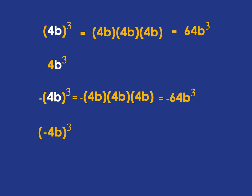And then in the next example, we've got negative 4b in the brackets cubed, so it's that whole negative 4b that is being cubed. So what you get is negative 4b times negative 4b times negative 4b, and a negative times a negative times a negative gives me a negative, and then 4 times 4 times 4 is 64, b times b times b is b cubed. So we get negative 64b cubed again here.